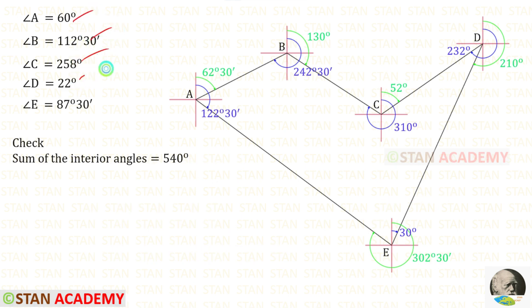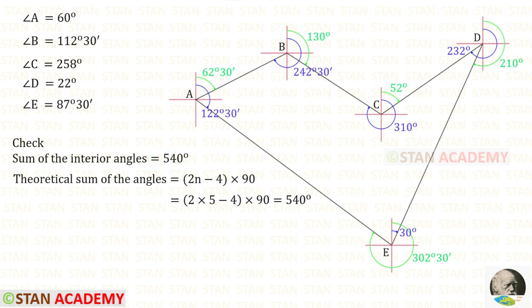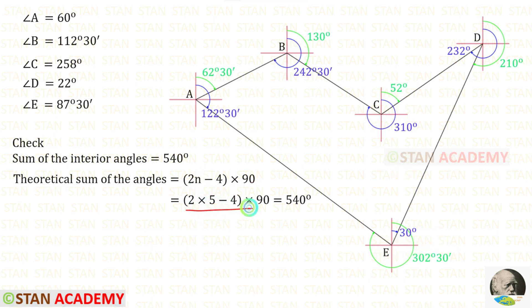Now let us apply a check. We add all five interior angles and get 540 degrees. The formula for the theoretical sum is (2n − 4) × 90 degrees. Here n is 5, so the result is 540 degrees. Both values are the same, so the check is satisfied.